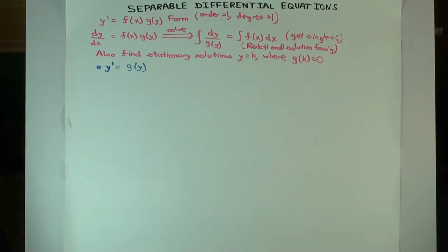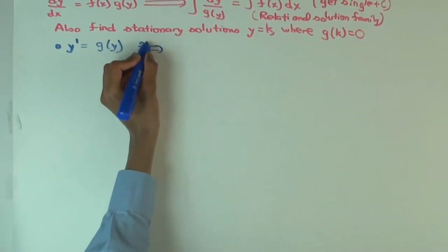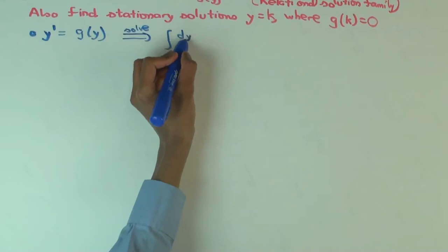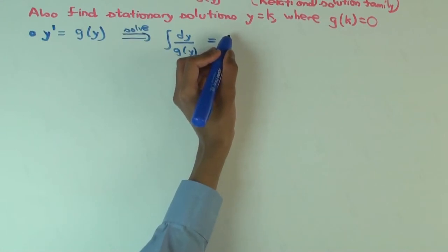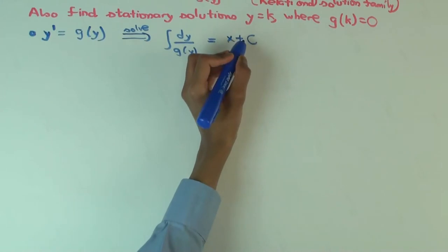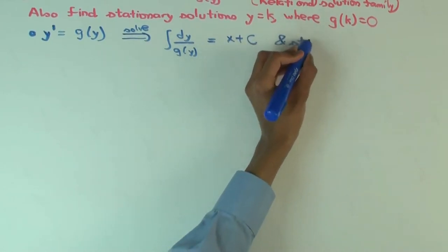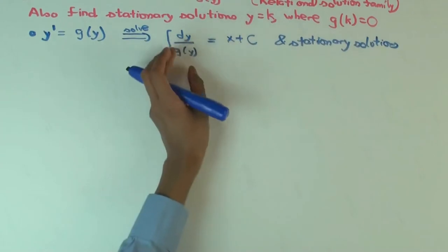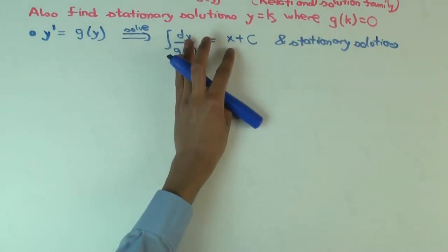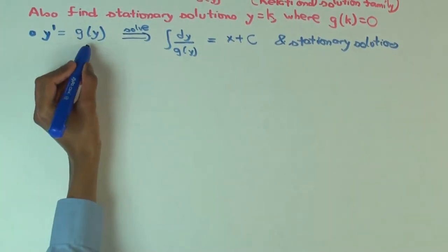In that case you solve it the same way, except the x side gives you the integral of 1 dx, which is just x plus C. You also need to include stationary solutions. In this situation you actually manage to write x as a function of y — when you integrate, you get some function of y equals x plus C. So you get x in terms of y instead of y in terms of x, and to reverse things you need to do function inversion.